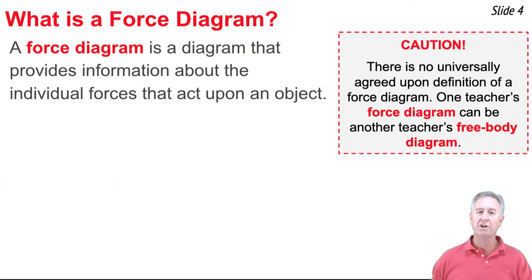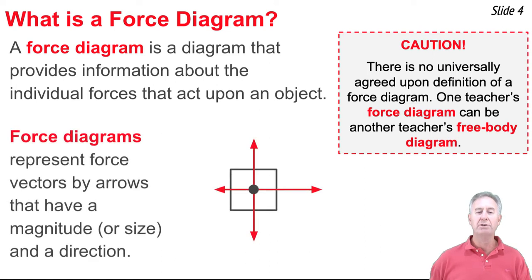Now, when we talk about a force diagram, what we're doing is we're representing all information about all the individual forces that are acting upon the object. Here you see a picture of a force diagram. You'll notice that there are four arrows attached to the object. Each one of these arrows represents a force. The arrows have a specific length, and the length of the arrow is indicative of the strength or magnitude of the force. And each arrow has a specific direction, and the direction is in the direction of the force.